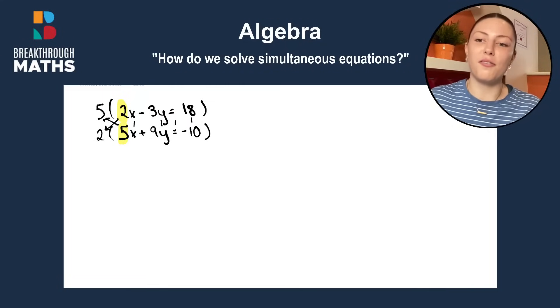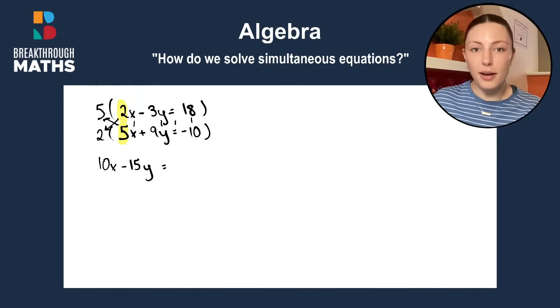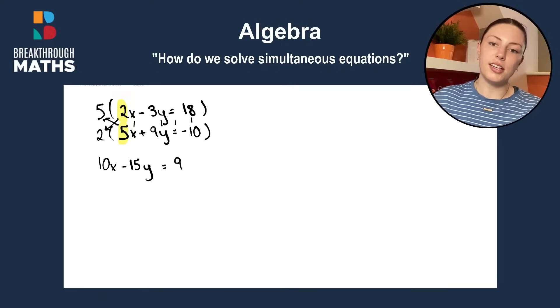Okay, then we just multiply out. So, 5 times 2x gives us 10x. 5 times minus 3 is minus 15y. And then we have 18 times 5 and that gives us 90.